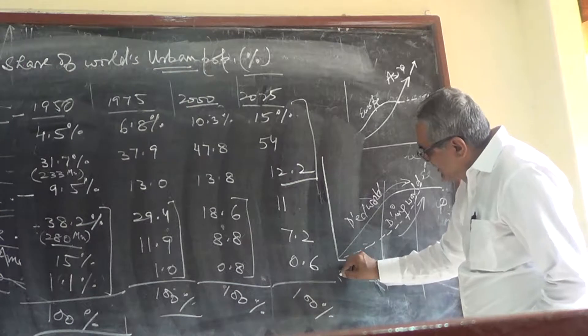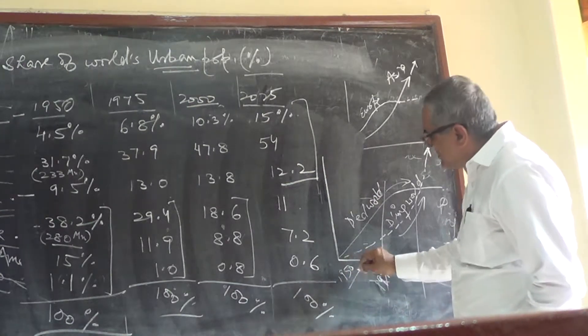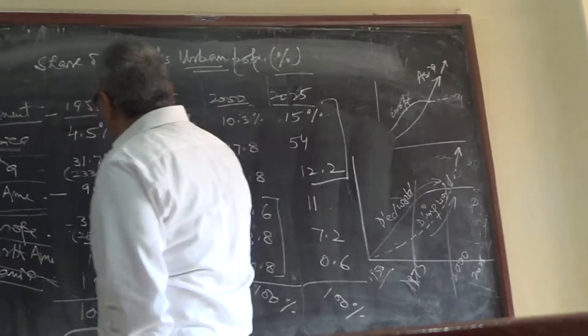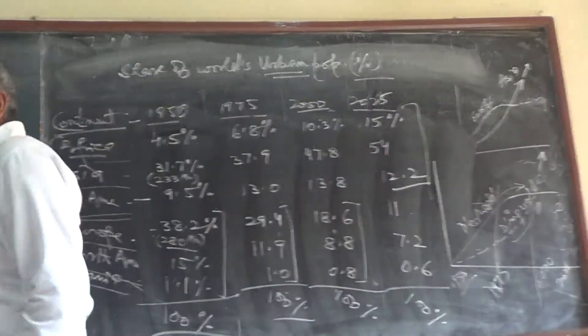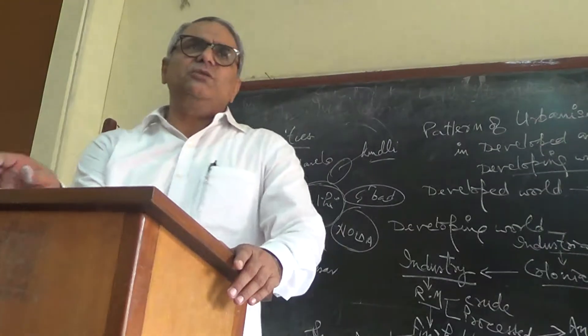I am just discussing 1950, where the picture started. In 1950 they were almost equal, but now the picture has changed. So this is all about the distribution.